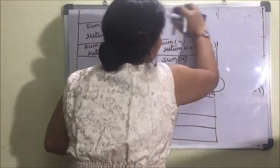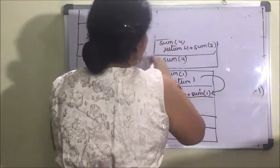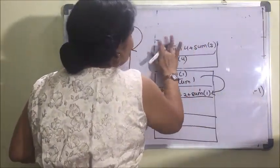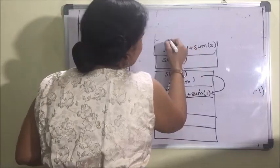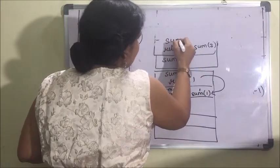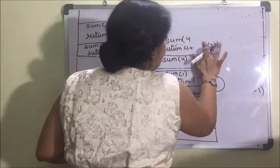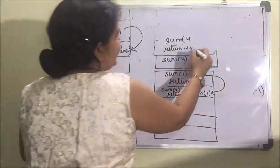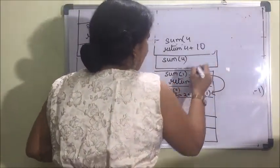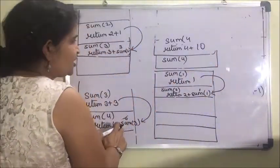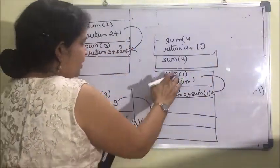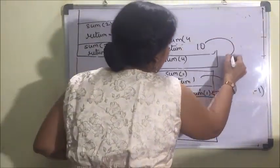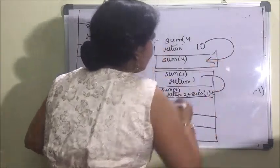Sum(4) now becomes return 4 plus 6, which is 10. Sum(4) returns 10 and passes it back.